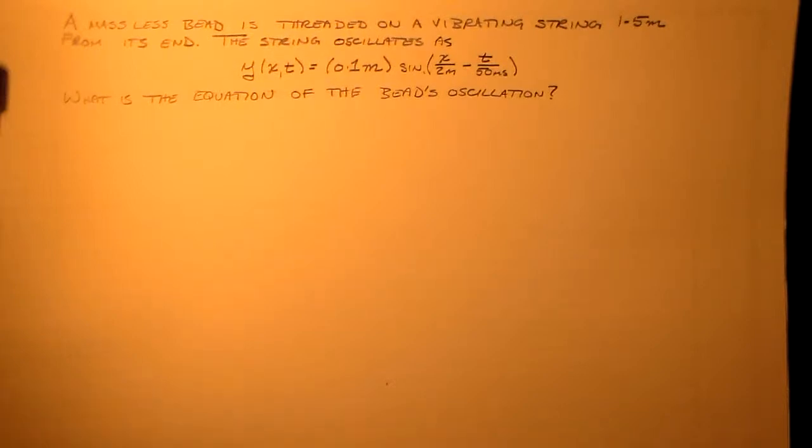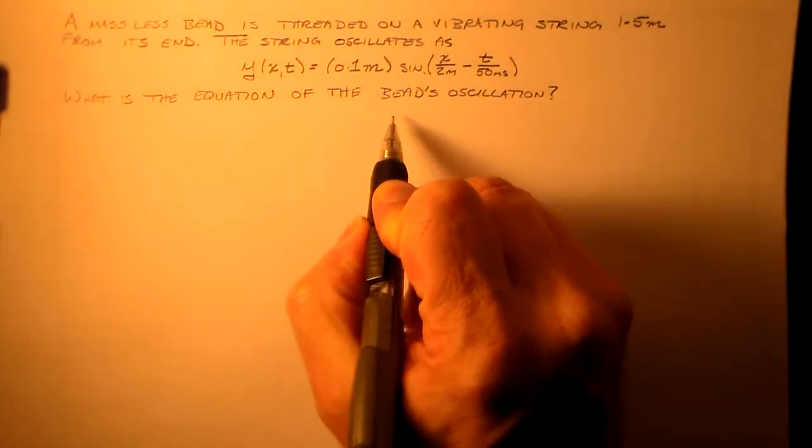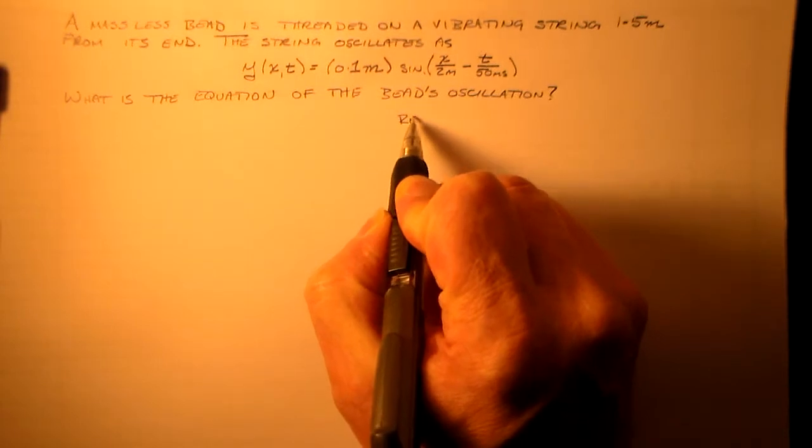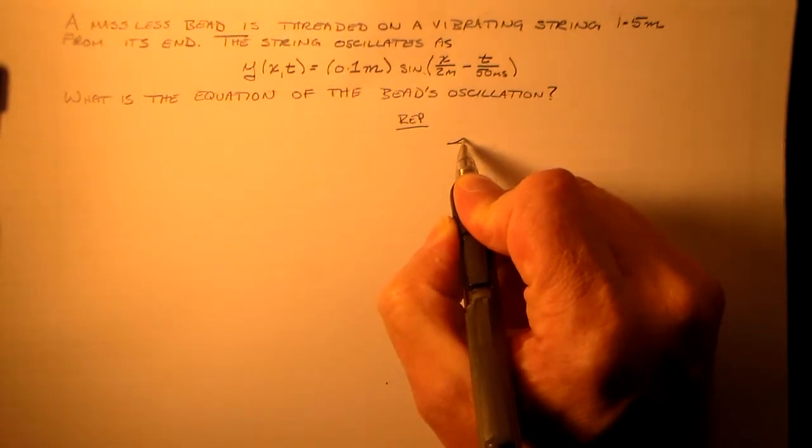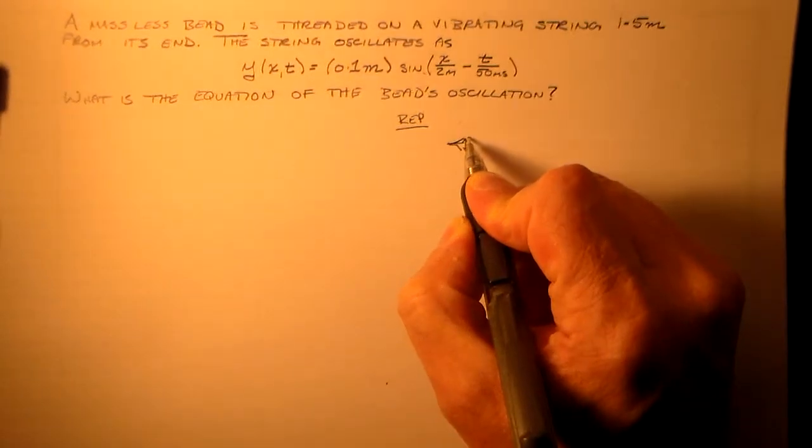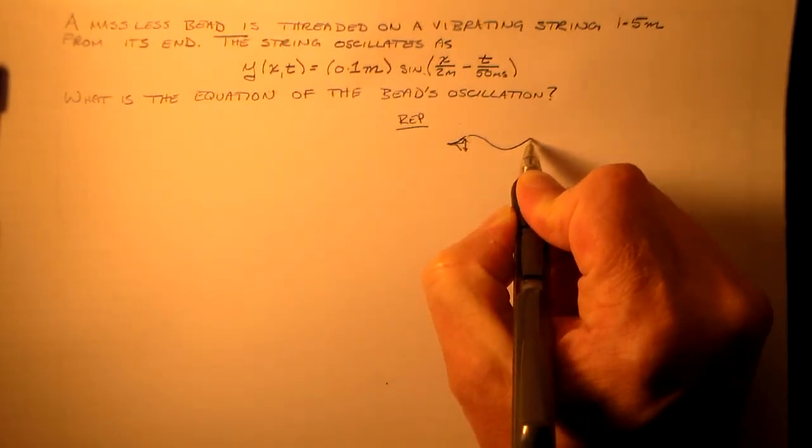Okay, I'd like to try something fairly simple here. I want to look at a massless bead that's on the string. So I've got a vibrating string, right? And so the vibrator for the string is here, going up and down, and that's vibrating the string sort of like this.